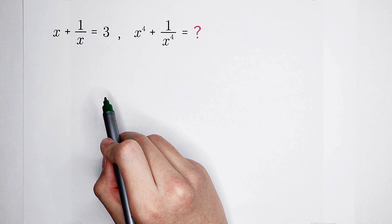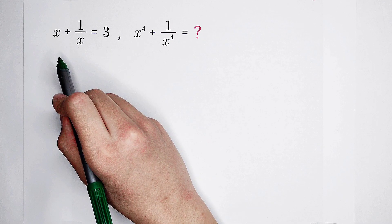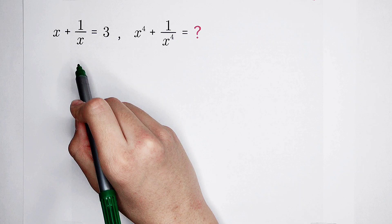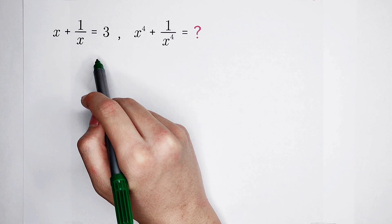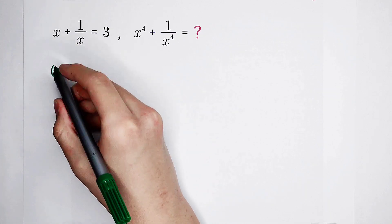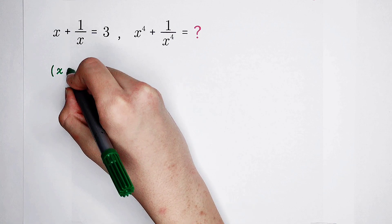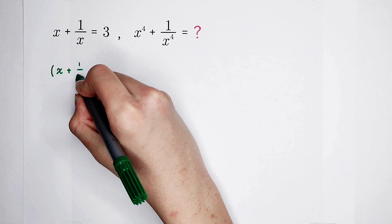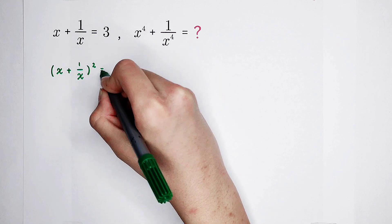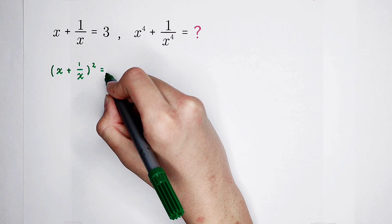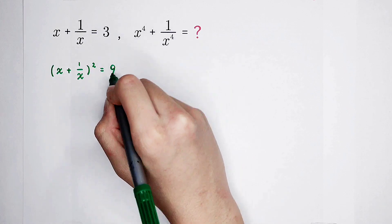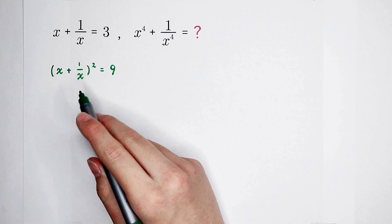So first, let's do it. How should we reach x squared plus 1 over x squared? Of course, we can just raise both hand sides to the power of 2. So easy. So now, x plus 1 over x, all squared, is equal to 3 squared, is equal to 9. x plus 1 over x, squared, is equal to 9.